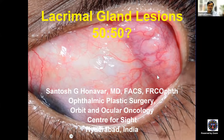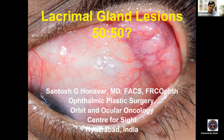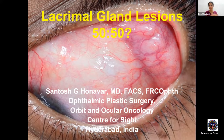The title is lacrimal gland lesions 50-50. Earlier it was believed that 50% of the tumors are epithelial and 50% are non-epithelial, out of which 50% are benign and 50% malignant. And out of that, 50% of malignant are adenoid cystic carcinoma.